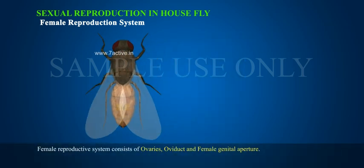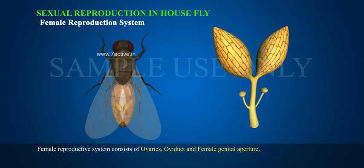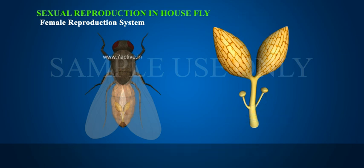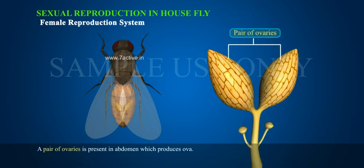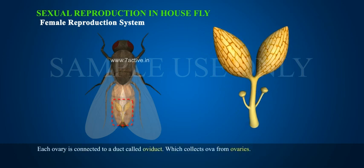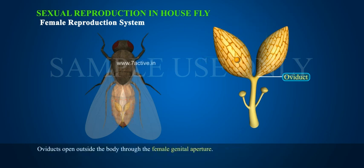The Female Reproductive System consists of ovaries, oviduct, and female genital aperture. A pair of ovaries is present in the abdomen, which produces ova. Each ovary is connected to a duct called oviduct, which collects ova from the ovaries. Oviducts open outside the body through the female genital aperture.